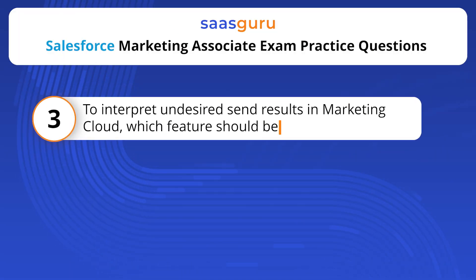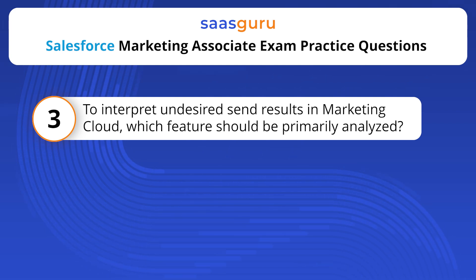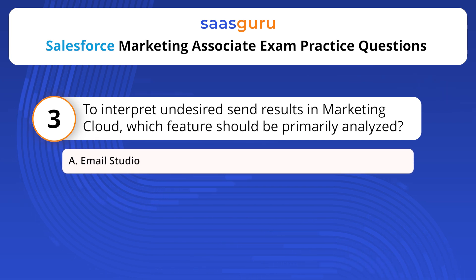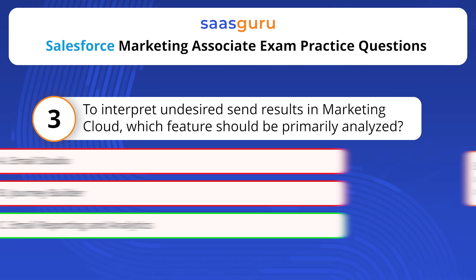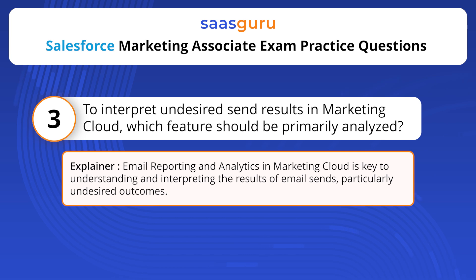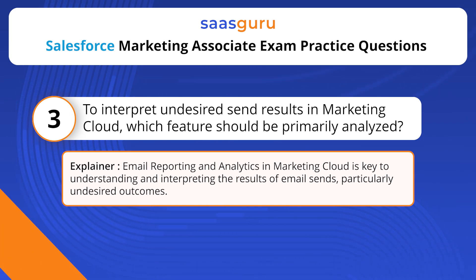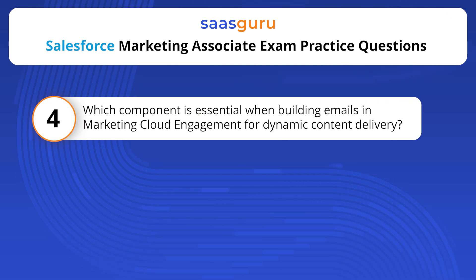To interpret undesired send results in Marketing Cloud, which feature should be primarily analyzed? Options: Email Studio, Journey Builder, Email Reporting. The answer is option C — Email Reporting. Email Reporting and Analytics in Marketing Cloud is key to understanding and interpreting the results of email sends, particularly undesired outcomes.